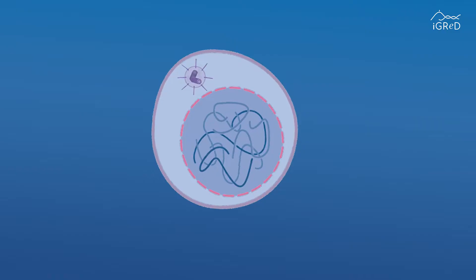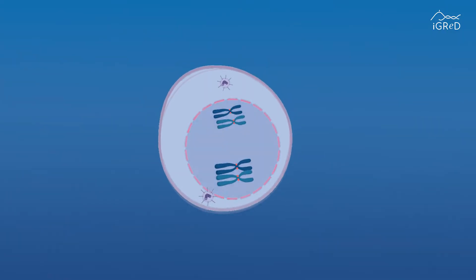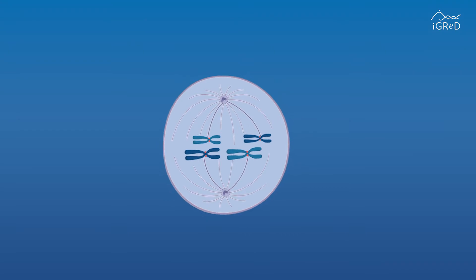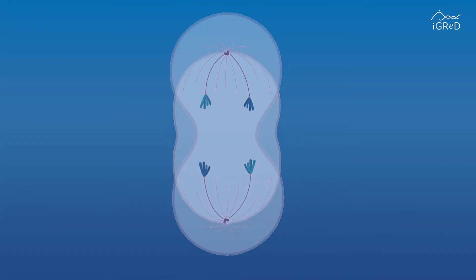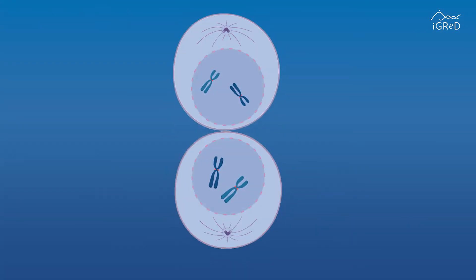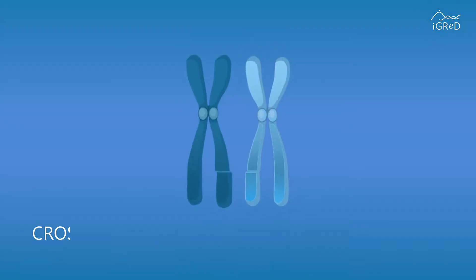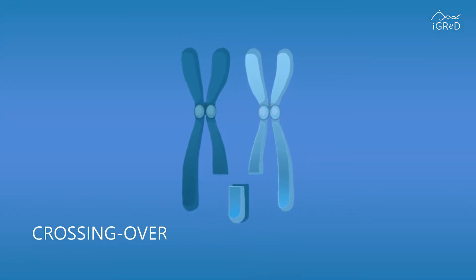The following repair of these breaks is precisely regulated to establish physical links between parental chromosomes. These physical links have two essential functions: first, they promote accurate segregation of parental chromosomes, which is essential for fertility; and they create genetic diversity by allowing exchange of genetic material between parental chromosomes.